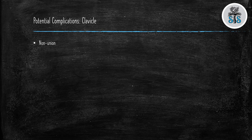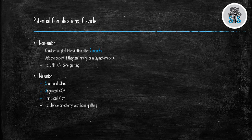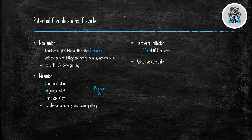Potential complications of clavicle fractures: Non-unions — consider surgical intervention after nine months. Ask if the patient is having pain, as this can be an absolute indication for open reduction internal fixation with or without bone grafting. Malunion is defined as shortened greater than 3 centimeters, angulated greater than 30 degrees, and translated greater than 1 centimeter — remember this with the SAT mnemonic — treated with a clavicle osteotomy or bone grafting. Hardware irritation occurs especially with superior plating in about 30% of patients. Additional complications include adhesive capsulitis and neurovascular injury, which is more common with superior plating than anterior plating.